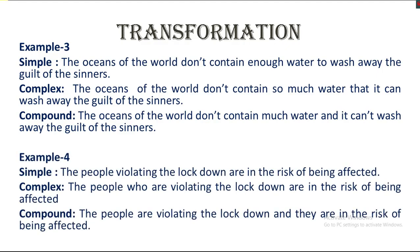Then look at example number four. Simple — the people violating the lockdown are in the risk of being affected. Here, 'violating the lockdown' is the present participle phrase and it is acting like an adjective. If we turn this adjective phrase into a clause, we get the complex: the people who are violating the lockdown are in the risk of being affected. Compound — the people are violating the lockdown and they are in the risk of being affected.